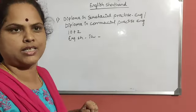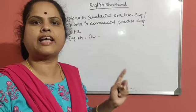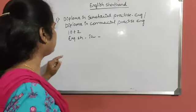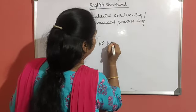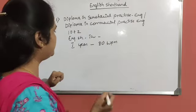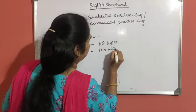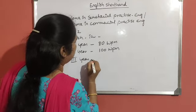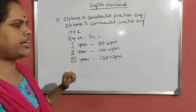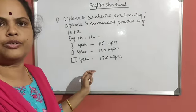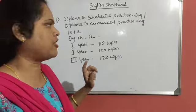The total subjects will be around 11. You can learn English Shorthand for three years after completing either 10th or 12th standard. In the first year, you have to give the exam for 80 words per minute speed. Second year is 100 words per minute, and the third and final year is 120 words per minute. The Board of Technical Education will issue a mark card to you after qualifying this exam.